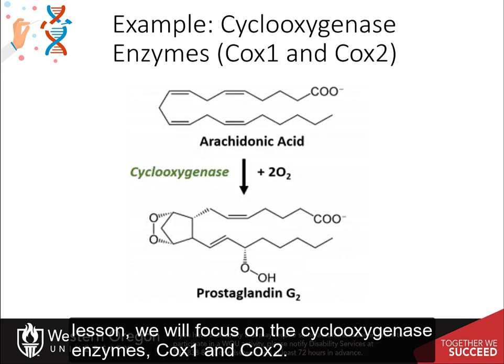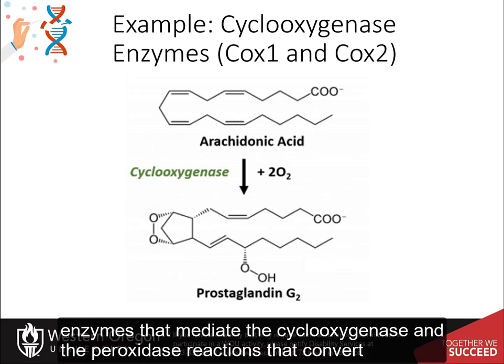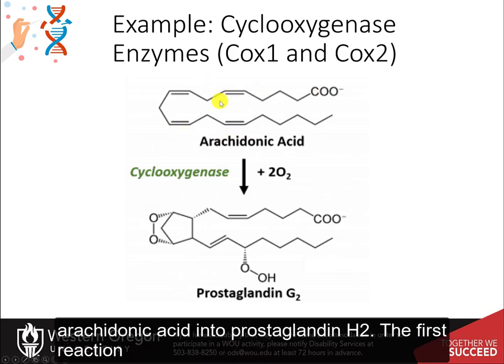In this lesson, we will focus on the cyclooxygenase enzymes, COX-1 and COX-2. These are both isozymes of one another. Cyclooxygenase enzymes are bifunctional enzymes that mediate the cyclooxygenase and the peroxidase reactions that convert arachidonic acid into prostaglandin H2.